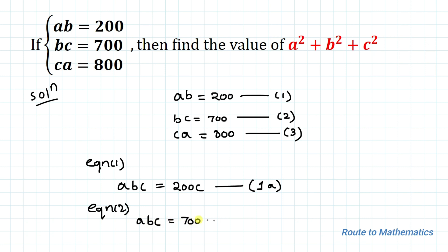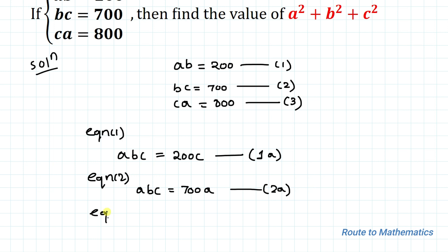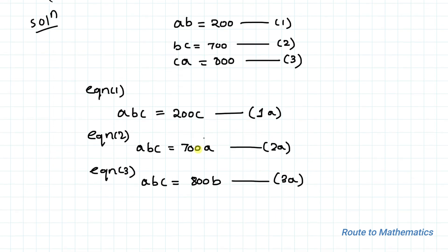In equation 3, the missing variable is b, so multiplying both sides by b gives abc = 800b — call this equation 3a.